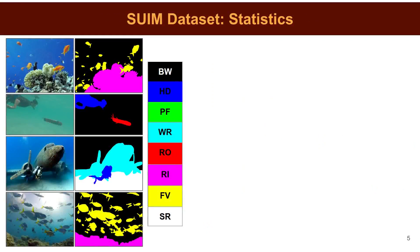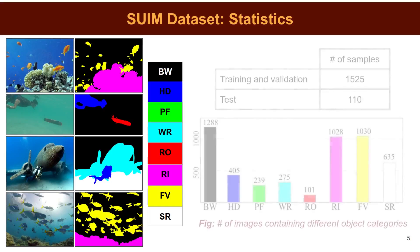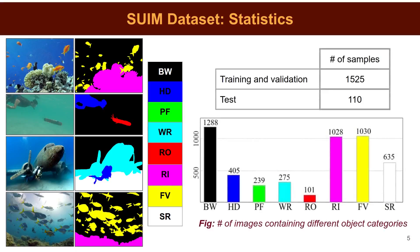There are over 1500 annotated images for training and validation, and another 110 samples are provided for benchmark evaluation. As shown in the bar chart, the coral reefs, fish, and seafloor are present in a large fraction of these images. We also collected data during various human-robot collaborative experiments.